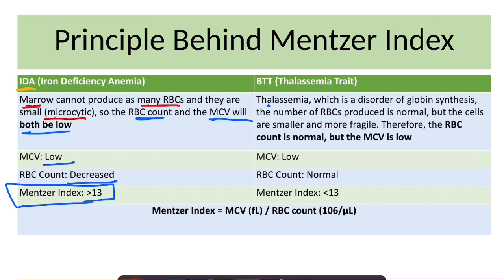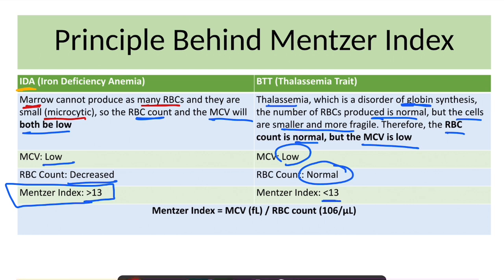Whereas in thalassemia, which is a disorder of globin synthesis, the number of RBCs produced is either normal or slightly high, but the cells are smaller and more fragile. Therefore, RBC count is normal but MCV is low. So when MCV is low and RBC count is normal, the Mentzer Index will be less than 13.